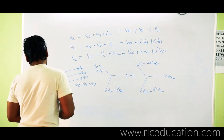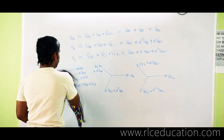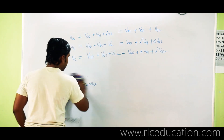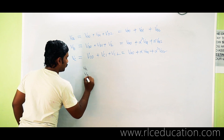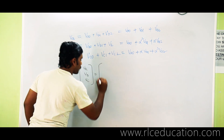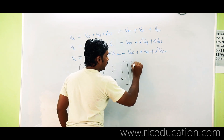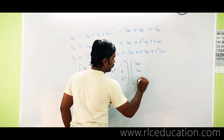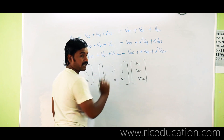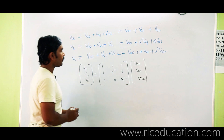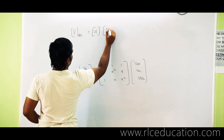Writing in matrix form: [VA, VB, VC] equals the matrix [1,1,1; 1, alpha squared, alpha; 1, alpha, alpha squared] multiplied by [VA0, VA1, VA2]. This is the unbalanced set expressed as a product of the complex operator matrix and the sequence components. We can write this as V_ABC equals alpha-matrix times V_012.